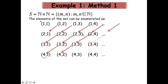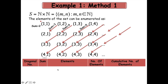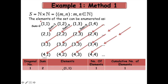We also observe that the sum of components lying on every diagonal is the same. For example, on the first diagonal this single element has sum of components equal to 2. Along the second diagonal I have two elements, and in both the sum of components is 3. Along the next diagonal the sum of components is 4 for every pair (m, n). If we write this in tabular form: along the first diagonal the sum is 2, the element is (1,1).